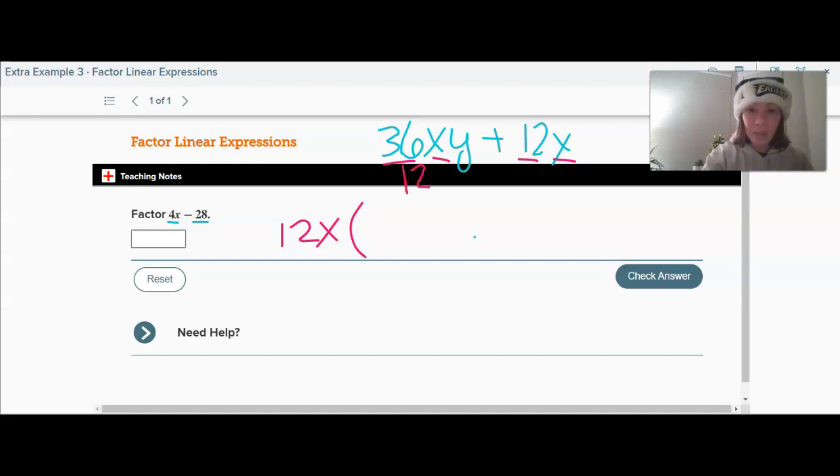And now if I divide this by 12X, then 36 divided by 12 is 3. X divided by x is 1. That cancels out. And so we're left with 3Y. And over here, 12X over 12X, anything divided by itself is just 1. So the factored form of this is 12X times 3Y plus 1. And I know this is a little bit complicated. So we're going to start with this today on the notes, try the check problem on the bottom of page 262.